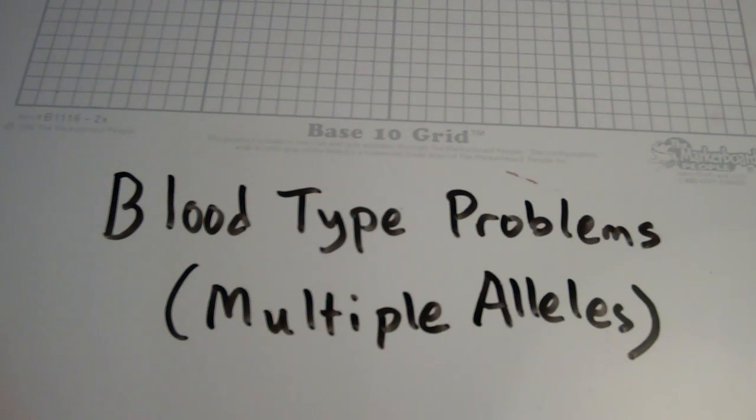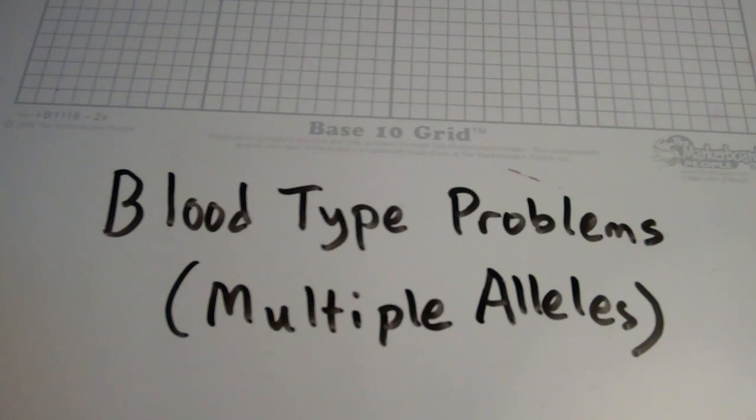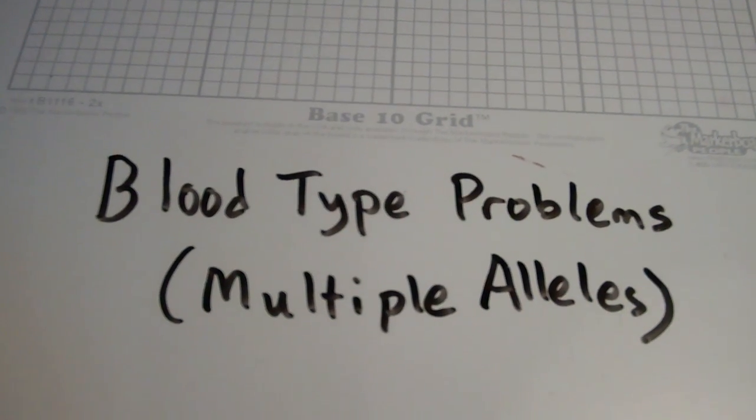Okay, another genetics video for all you people that have been absent lately. We're going to talk about multiple alleles today, also known as blood typing problems.